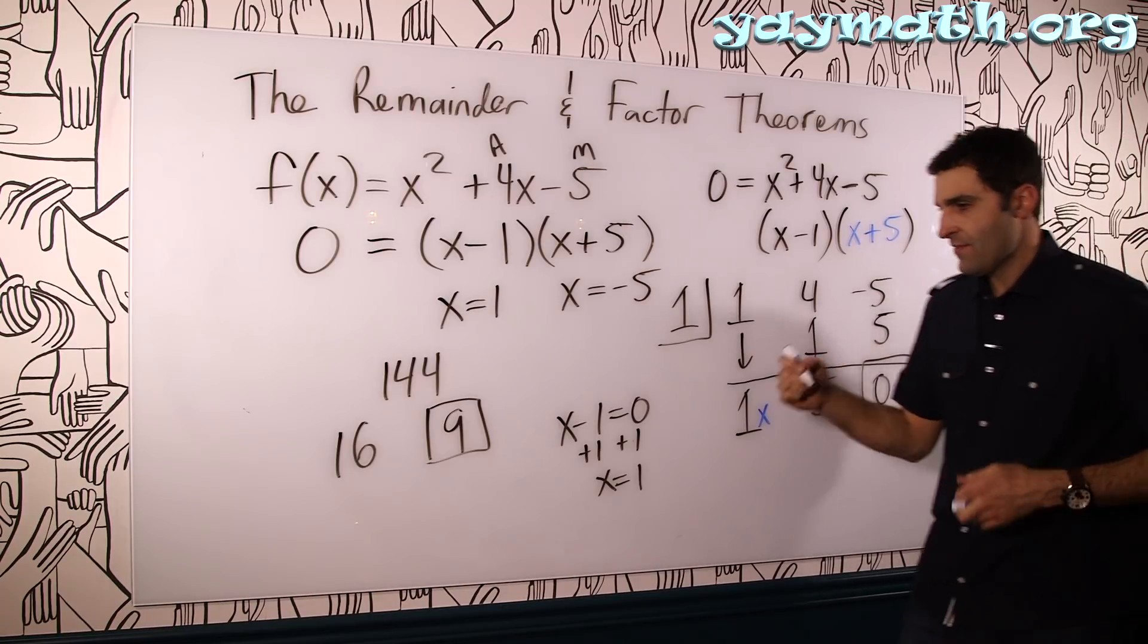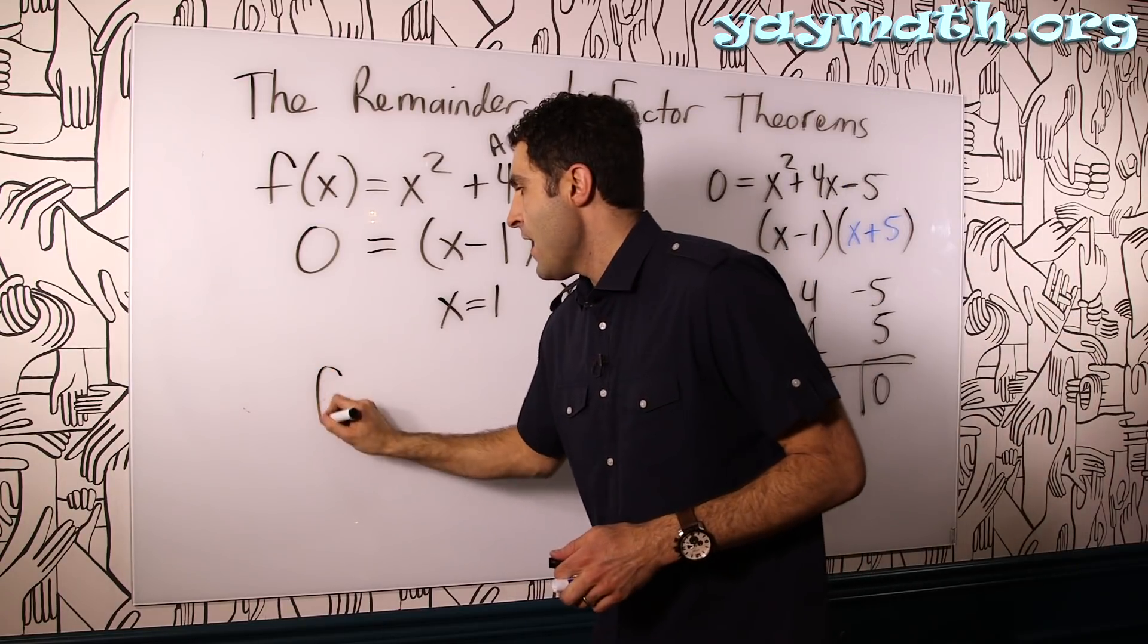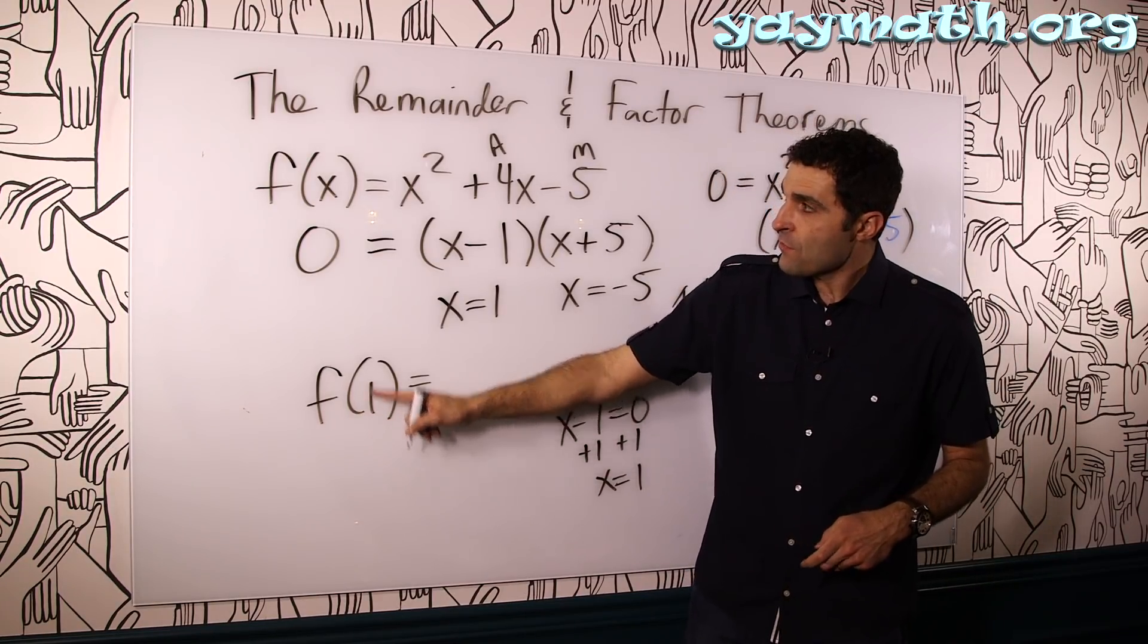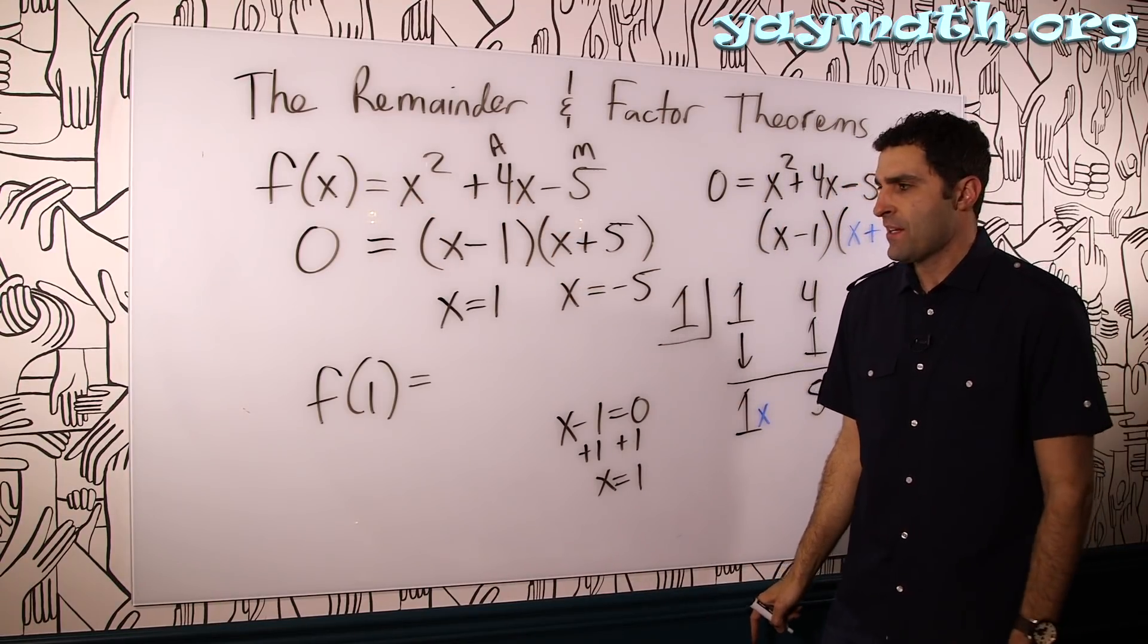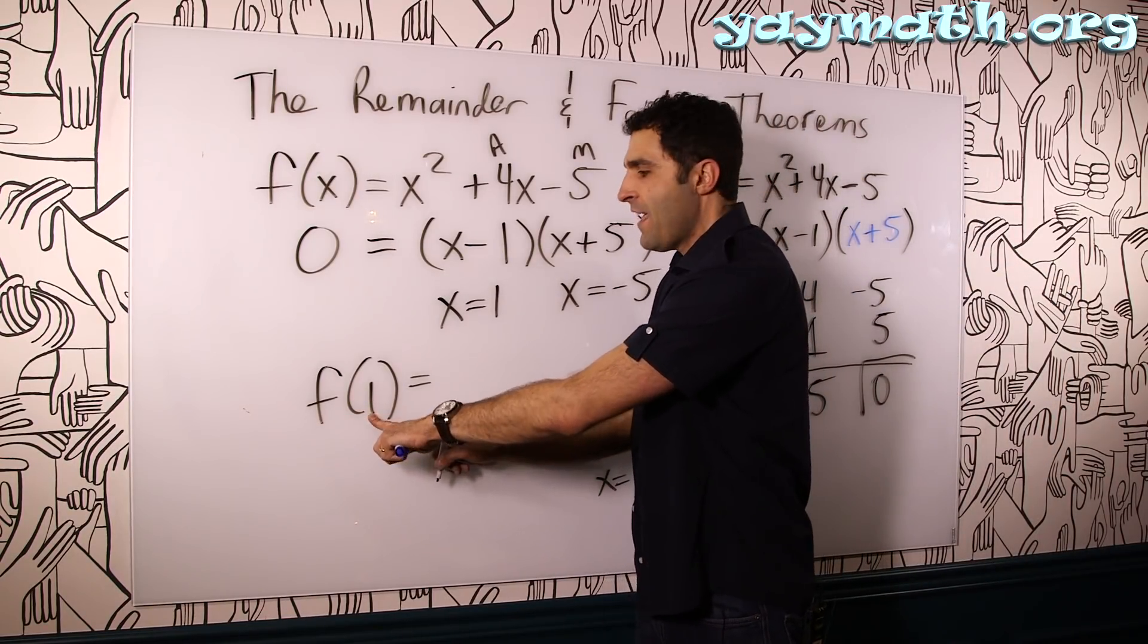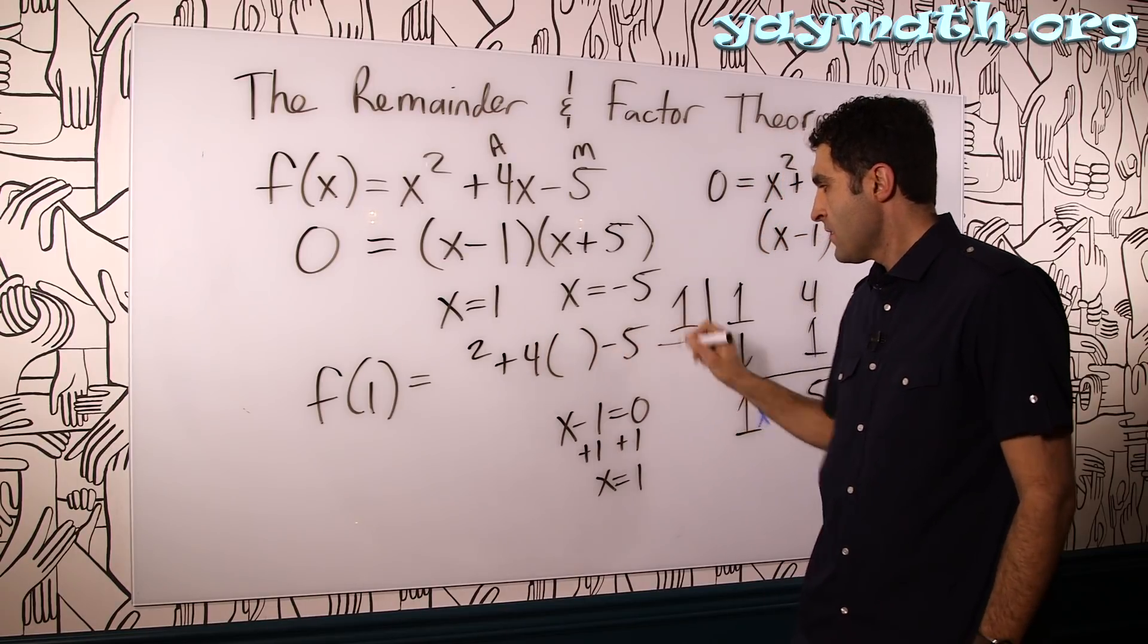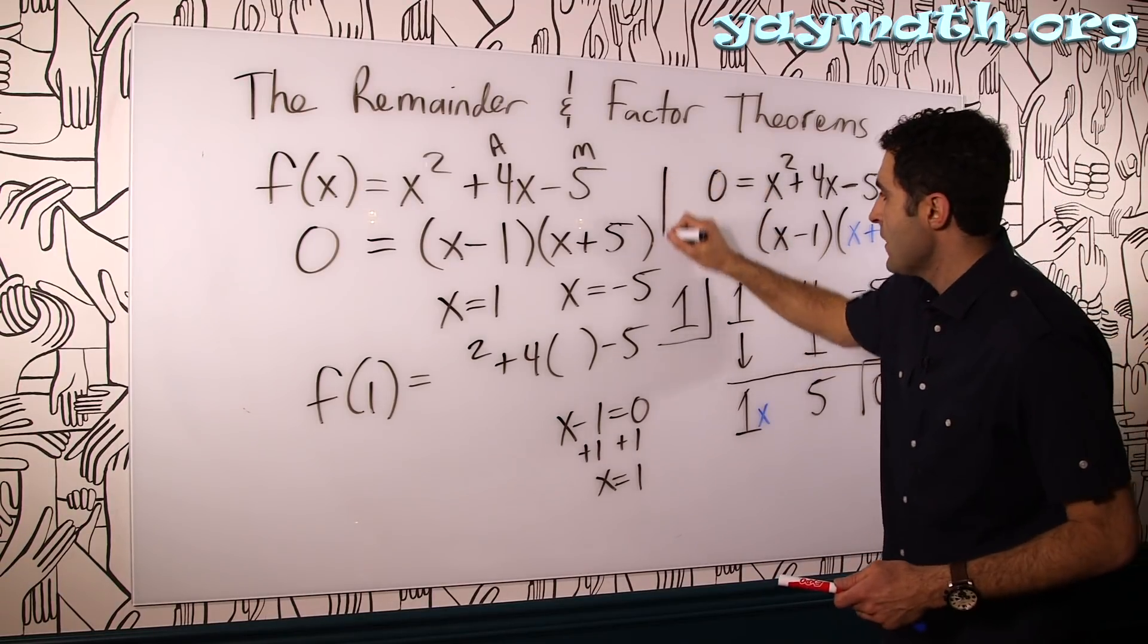One more thing to talk about here is the following. What is, let's take off our 16 of 144. F of 1. F of 1 means evaluate the function when x is 1. When x is 1, that would mean this x is 1. And we plug in 1 here and here. Let's see what it is. Because we know how to evaluate f of anything by simply plugging in. You just plug 1 into x, as a student would say. Let's just plug in 1 to x.